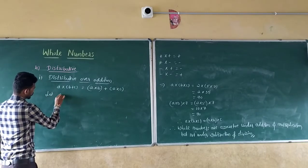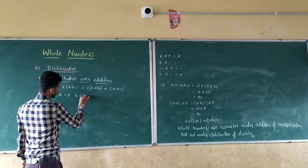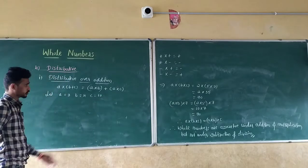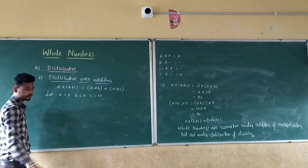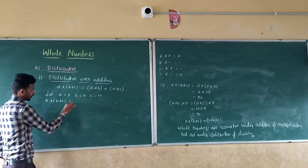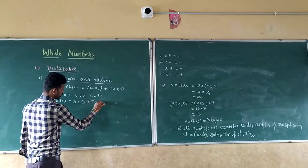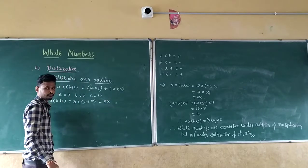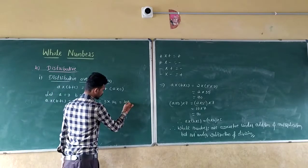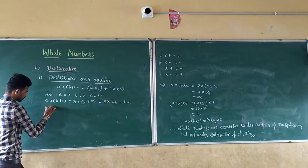Let A equals 3, B equals 4, and C equals 10. Check whether both answers are the same. So check A into (B plus C): that is 3 into (4 plus 10), which equals 3 into 14. Three 14s are 42. So the answer is 42.